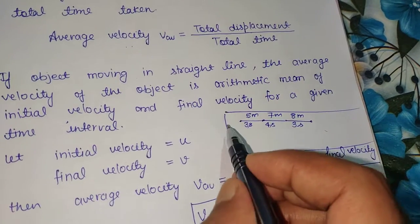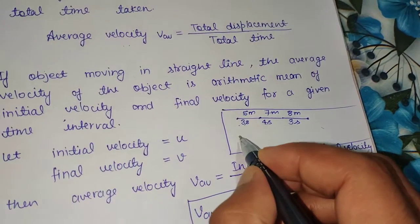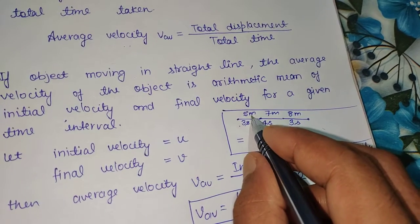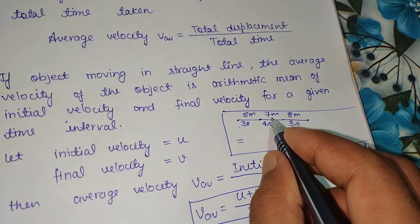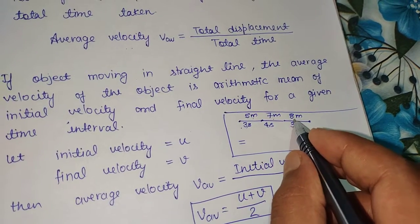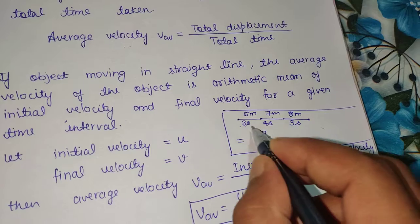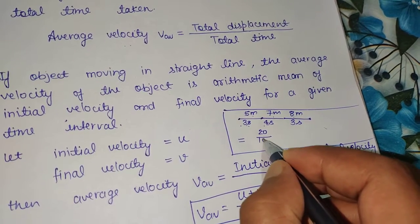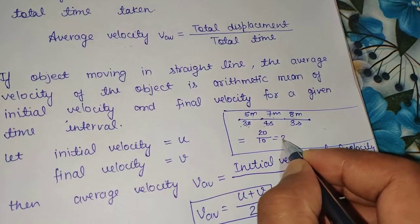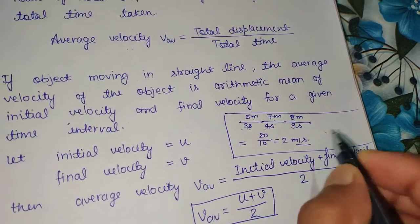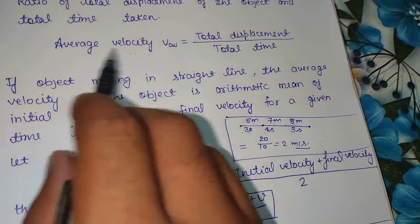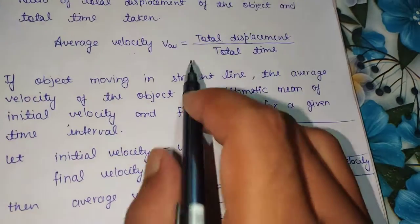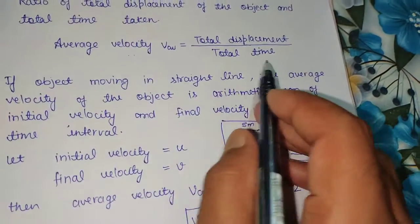Average velocity equals total displacement upon total time. For example, if the total displacement values add up — such as numbers like 5, 7, and so on — and the total equals 20 meters covered in 10 seconds, the average velocity would be 2 meters per second.